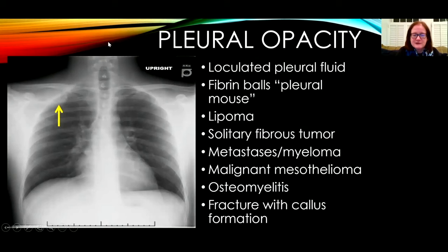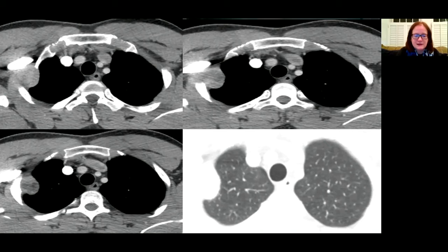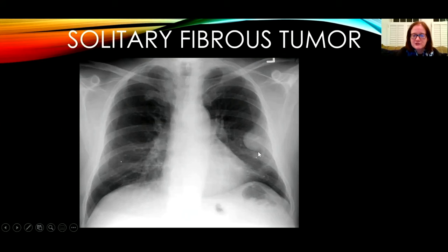Pleural opacification can result from many causes. This lesion was incidentally found in an emergency room patient — it makes obtuse angles with the chest wall and there is no bone destruction. CT shows a heterogeneous mass making obtuse angles with the chest. This turned out to be a benign pleural fibroma, resected because of the risk of transformation to malignancy. Solitary fibrous tumors can be quite mobile and soft, and they often have an appearance draped over the chest wall.